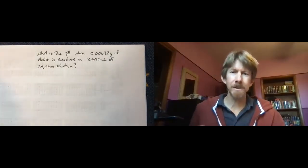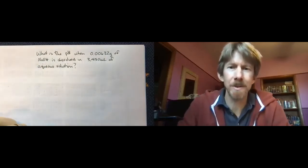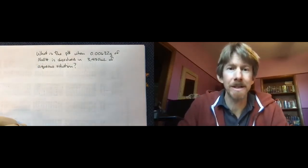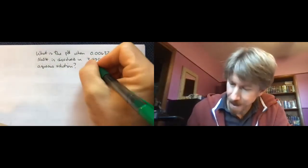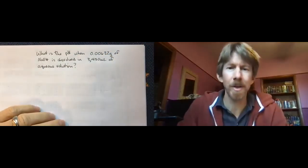This question says, what is the pH when 0.00632 grams of sodium hydroxide is dissolved in 3,000 (that's a comma there) 3,000, 430 milliliters of aqueous solution?